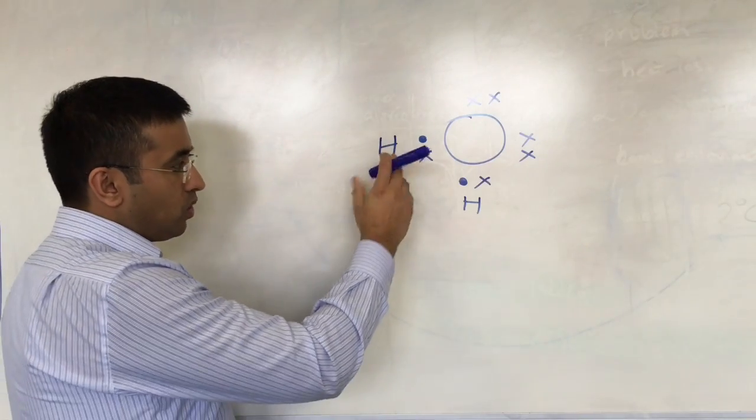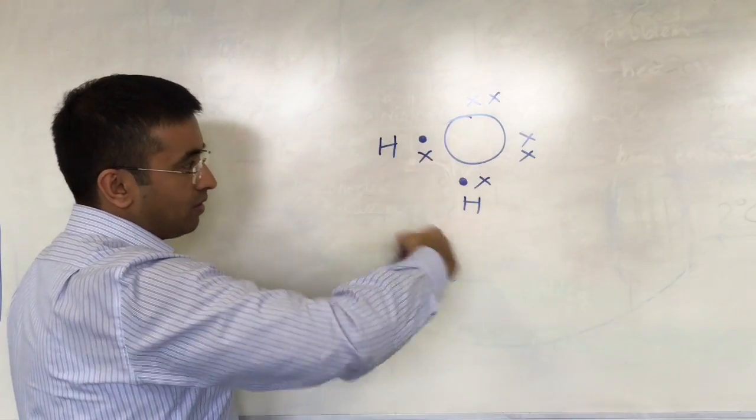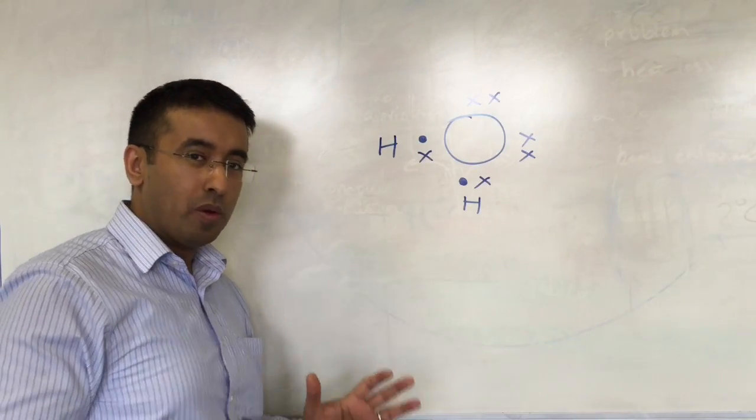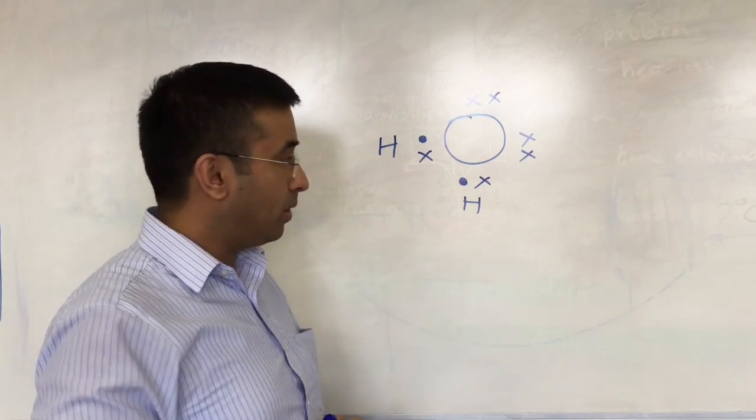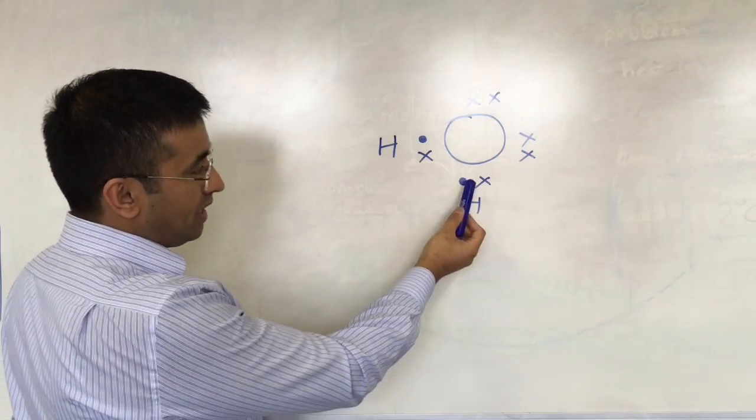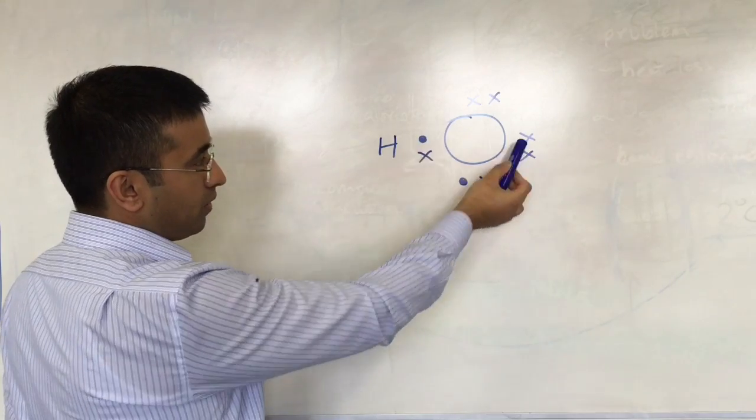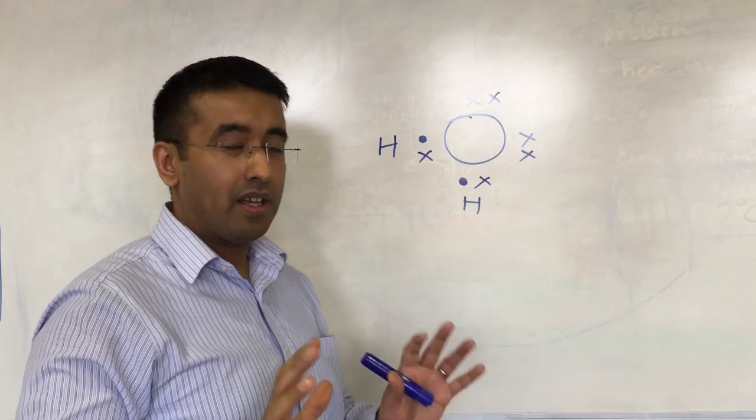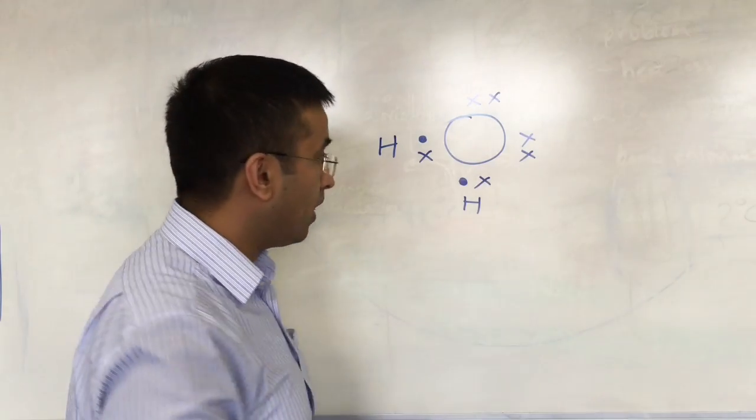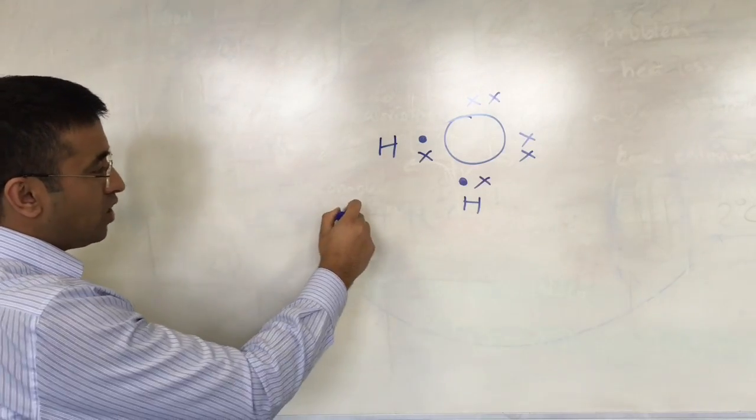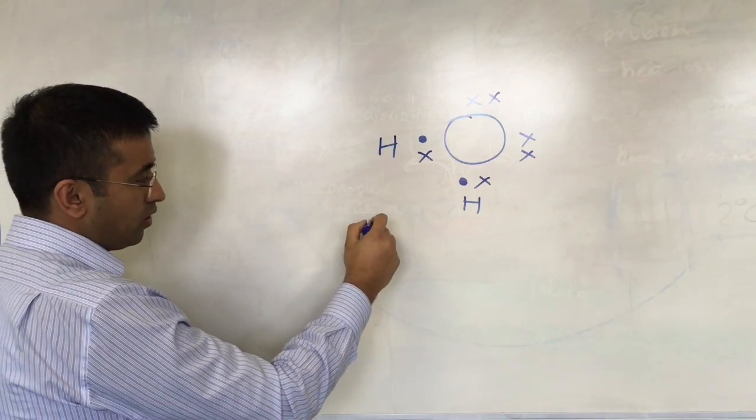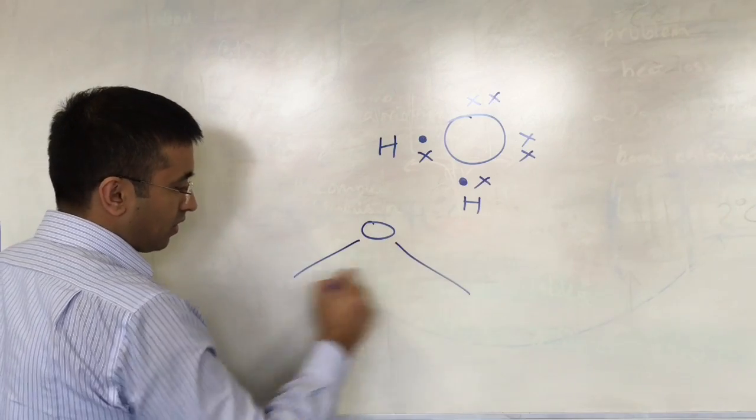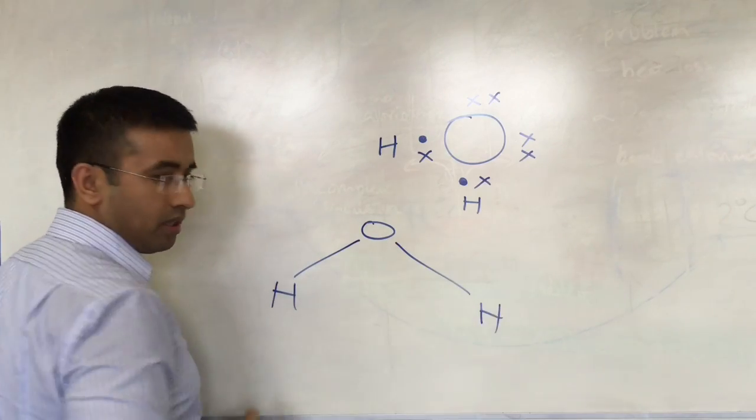Now you need to be able to draw the dot and cross diagram for water to appreciate why water is a non-linear molecule. It's because these pairs of electrons around the oxygen repel each other as far apart as possible that gives rise to a non-linear shape. So the non-linear shape is like so.